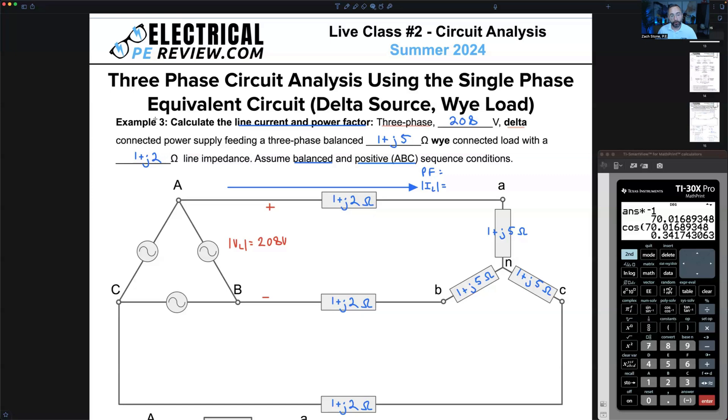Number three, calculate the line current and power factor. Three phase, 208 volt, here's the change: we've got a delta connected power supply feeding a three phase balanced one plus J5 ohm Y connected load. So just like the first problem, our load is Y connected. One plus J2 ohm line impedance, no difference.